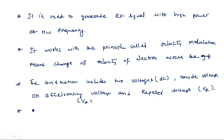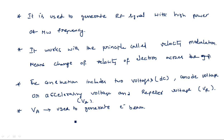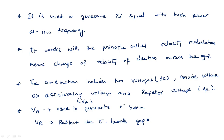By seeing the names, we can get an idea of their roles. The anode voltage Va is responsible for generating the electron beam — the electron gun gets energized and produces a beam of electrons towards the repeller. The repeller voltage is used to reflect the electrons back towards the gap. This is the basic story behind the construction of the reflex klystron.